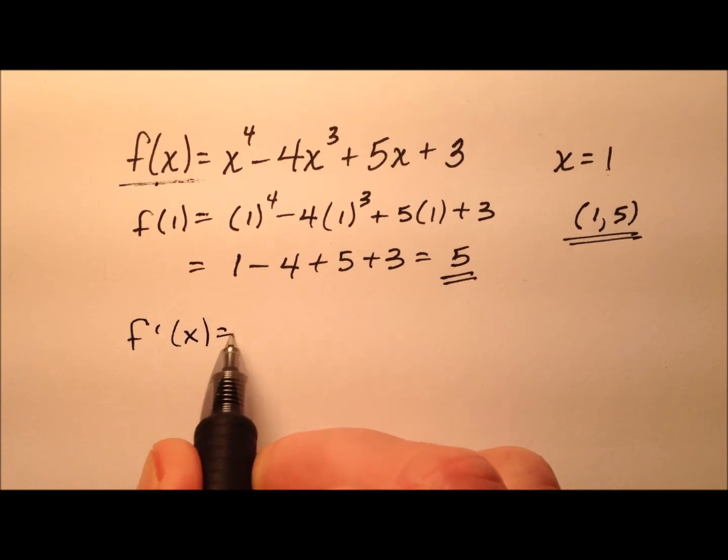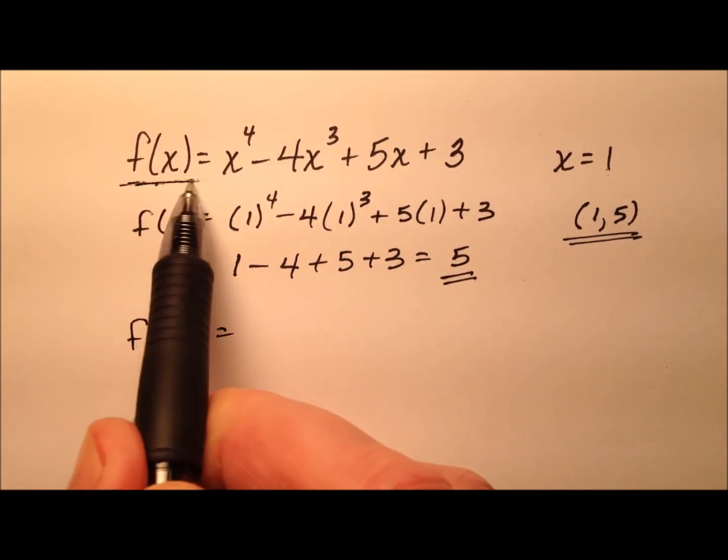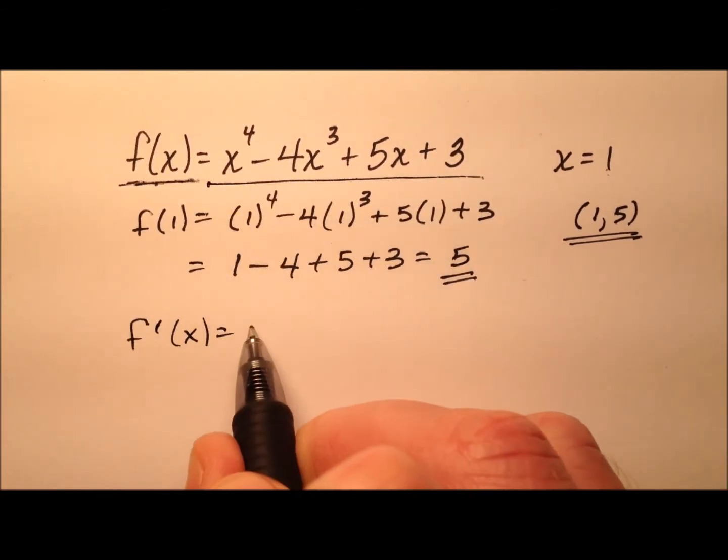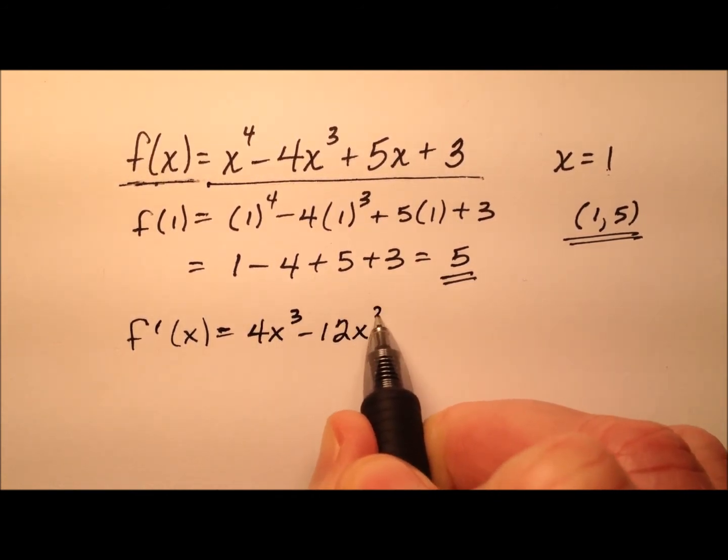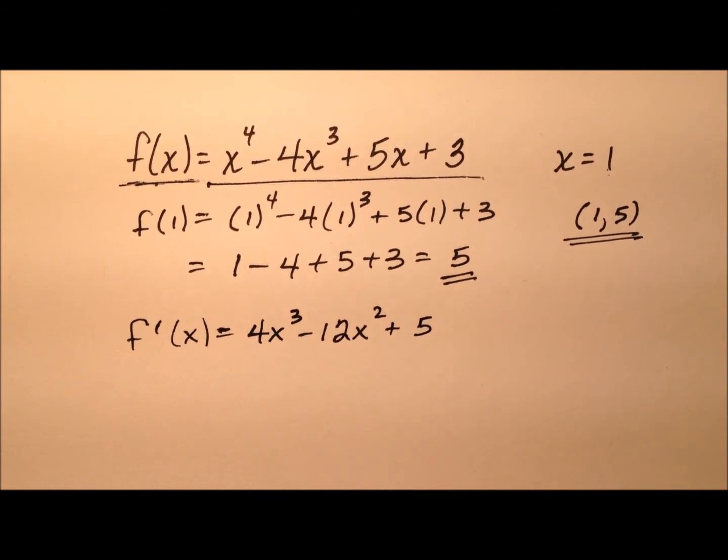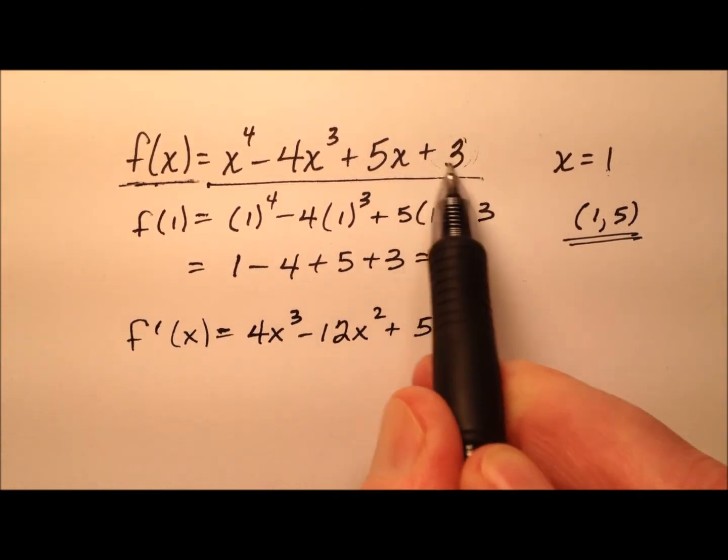So f prime of x, and this looks like a polynomial, so its derivative will be 4x cubed minus 12x squared plus 5, because the derivative of this constant is just 0.